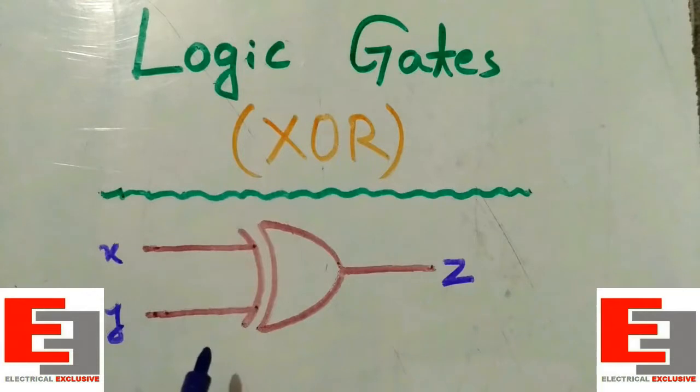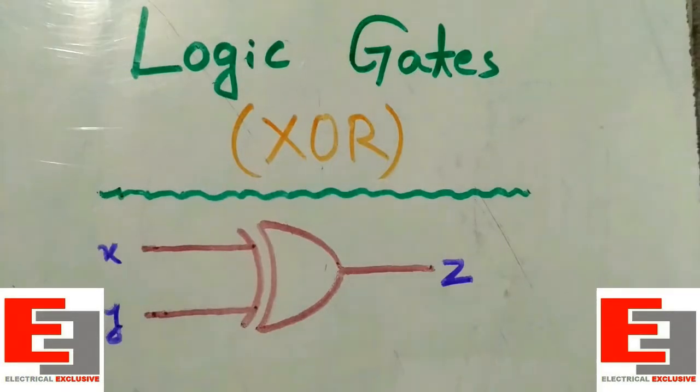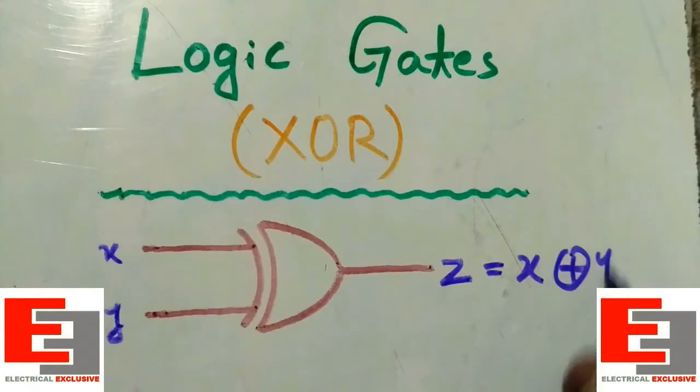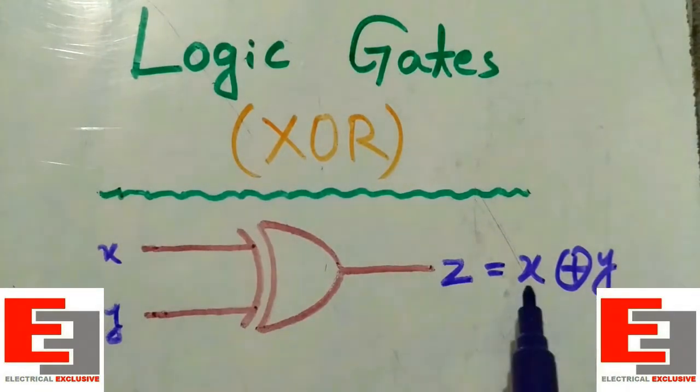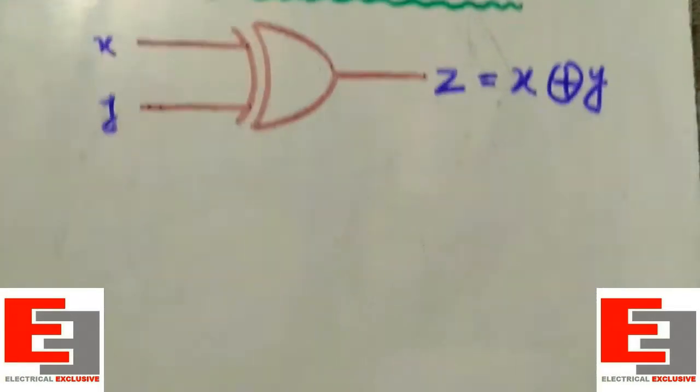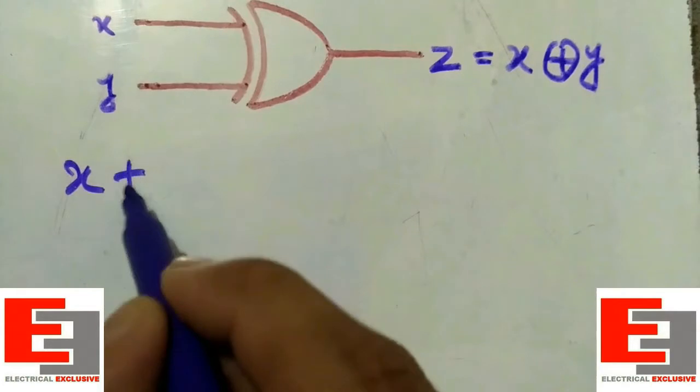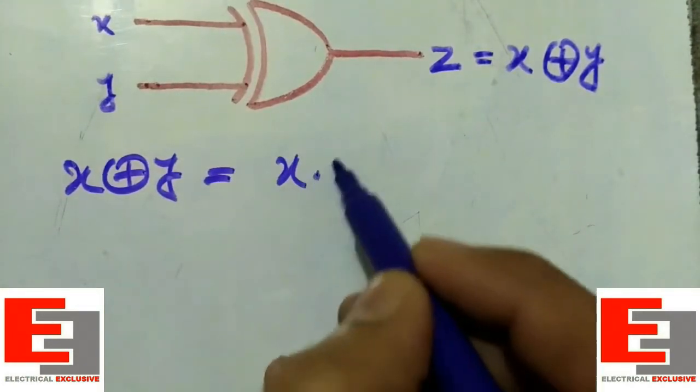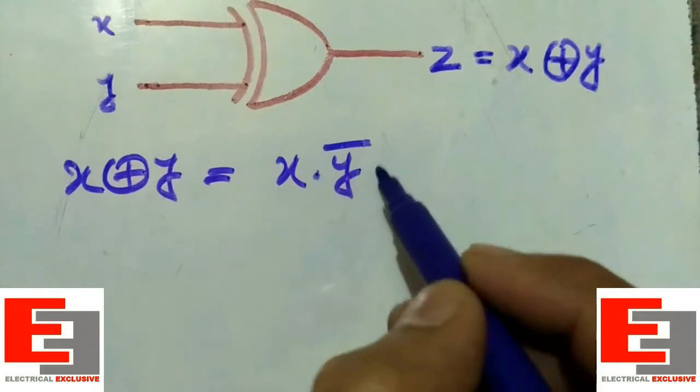The Boolean expression for the XOR gate is X XOR Y, whereas X and Y are the two inputs. If you simplify this expression, that would be X XOR Y is equal to X into Y bar plus X bar into Y.